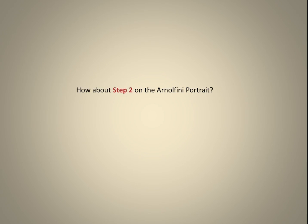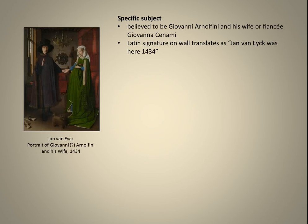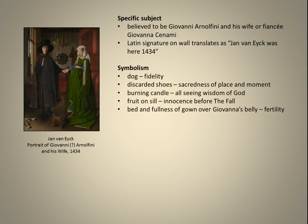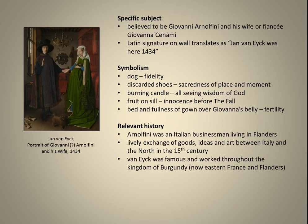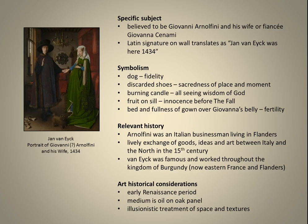Now Step 2 on the Arnolfini portrait. Specific subject: believed to be Giovanni Arnolfini and his wife or fiancée, Giovanna Cenami. The Latin signature on the wall translates as 'Jan van Eyck was here, 1434.' Symbolism: dog — fidelity; discarded shoes — sacredness of place and moment; burning candle — all-seeing wisdom of God; fruit on the sill — innocence before the fall; bed and fullness of gown over Giovanna's belly — fertility. Relevant history: Arnolfini was an Italian businessman living in Flanders, amid a lively exchange of goods, ideas, and art between Italy and the North in the 15th century; van Eyck was famous and worked throughout the Kingdom of Burgundy, now Eastern France and Flanders. Art historical considerations: Early Renaissance period, medium is oil on oak panel, with illusionistic treatment of space and textures.